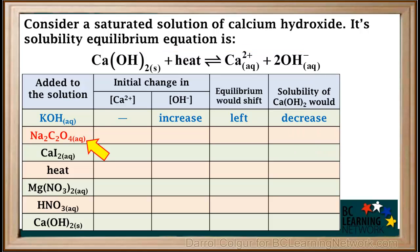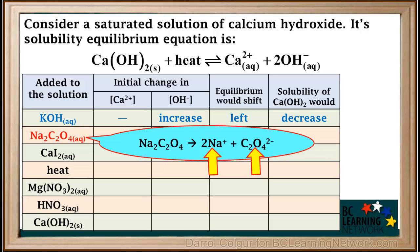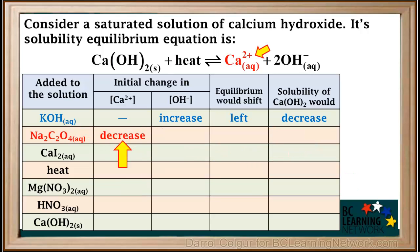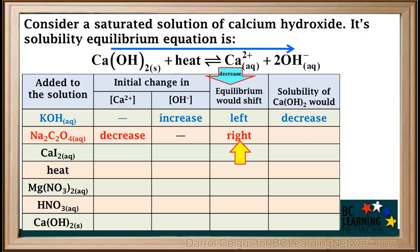Next we'll look at aqueous sodium oxalate. Sodium oxalate, an alkali metal compound, dissociates completely into sodium and oxalate ions. Sodium ions are spectators so we can discard them. The oxalate ion C₂O₄²⁻ is a negative ion, so we can see if it forms a precipitate with positive calcium ions. Looking on the Ksp table, we see that calcium oxalate has a low Ksp, meaning the oxalate ion does form a precipitate with Ca²⁺ ions. This would initially decrease the concentration of Ca²⁺, with no initial change in hydroxide ion concentration. Decreasing Ca²⁺ concentration will cause the equilibrium to shift to the right, increasing the solubility of calcium hydroxide.